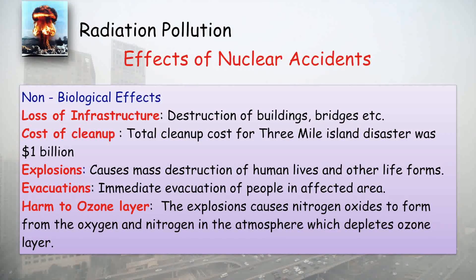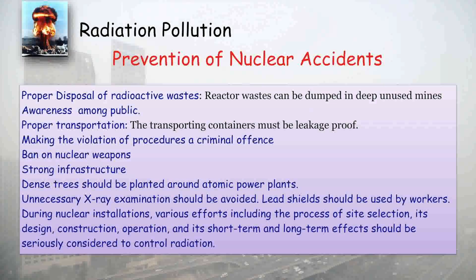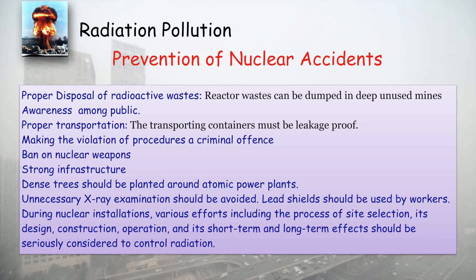To prevent nuclear accidents: radioactive waste must be properly disposed of in sealed packs inside unused mines; public awareness about nuclear radiation must be raised; violation of procedure should be a criminal offense; nuclear weapons should be banned; infrastructure must be strong with dense trees planted around atomic power plants; unnecessary X-ray examinations should be avoided; lead shields should be used by workers; and site selection, design, construction, operation, and short-term and long-term effects must all be seriously considered.